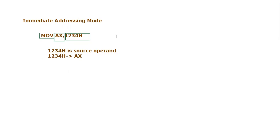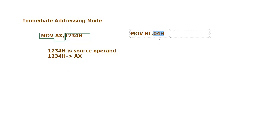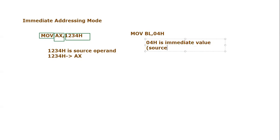We can take another example: MOV BL, 04h. Here we are using an 8-bit value. An 8-bit value can also be used as an immediate number. So 04h will be moved, after the execution of this instruction, into the BL register, which is the lower byte of the BX register. Here again, 04h is an immediate value and furthermore it is a source operand.